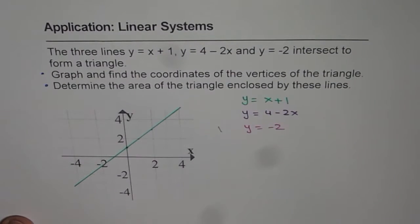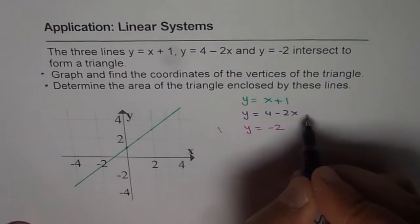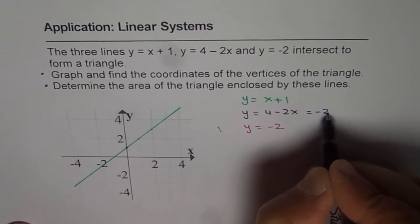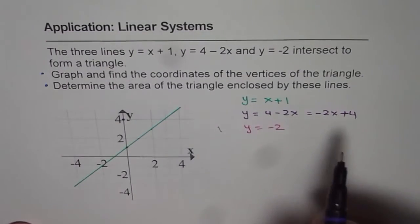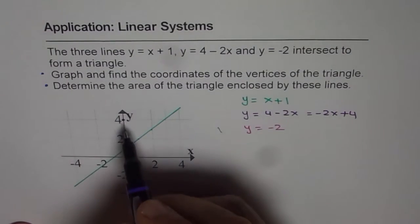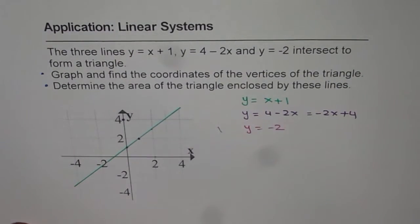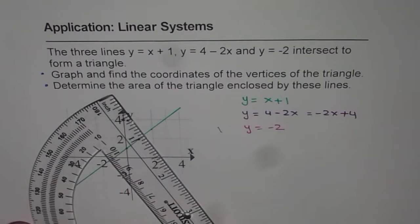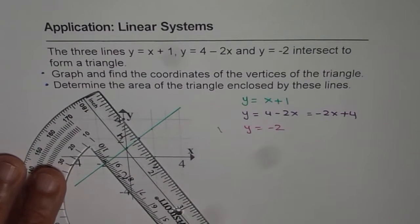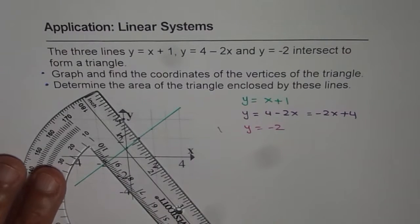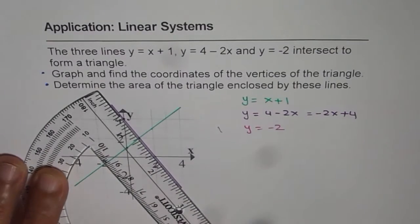The second line is y equals 4 minus 2x. You should see it like this: minus 2x plus 4. Y-intercept is 4 for us and slope is minus 2. That means down 2, 1 there. Down 2, 1 there. So let's join these points to get the second line. So that's the second line.